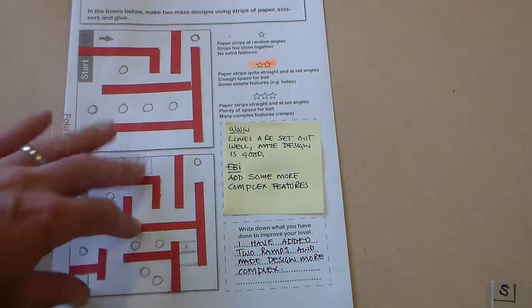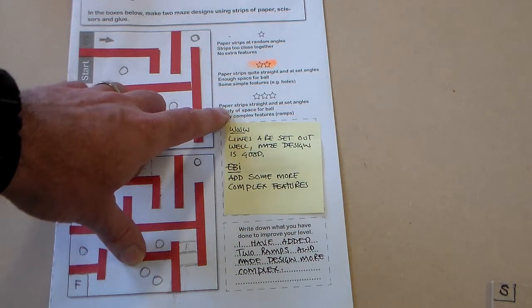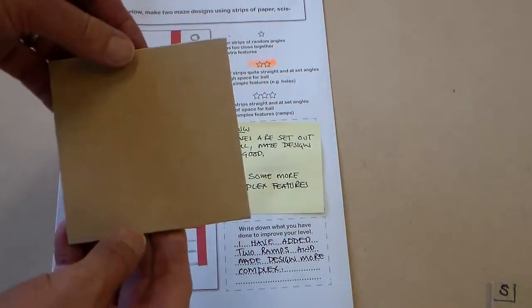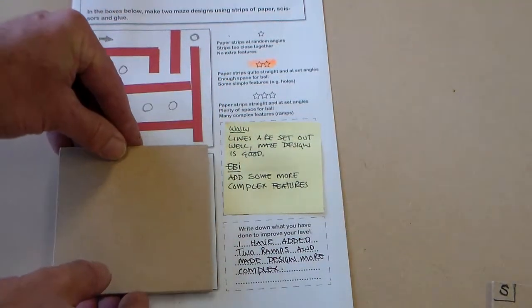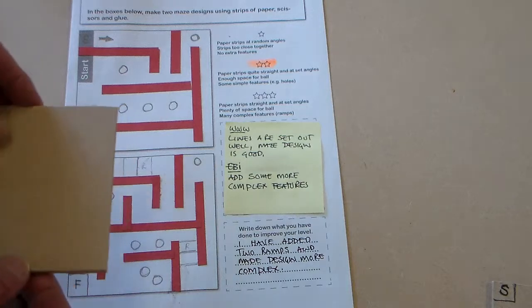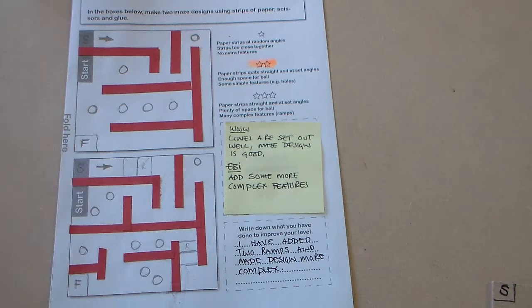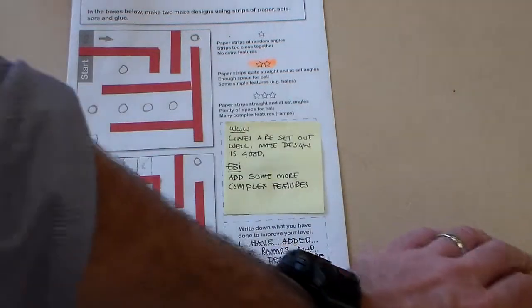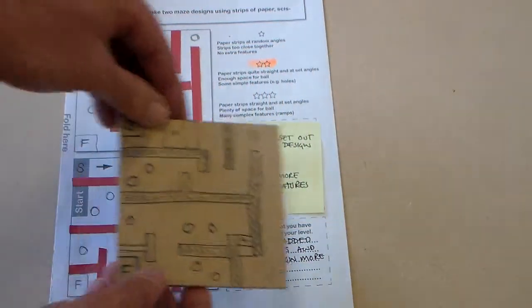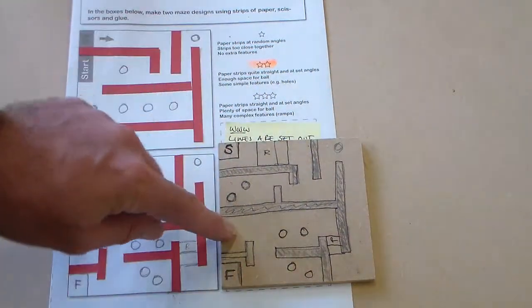Once we've got a design that we think is three stars, what we can do is take our square of MDF that we're going to put our maze on and we can carefully, using a pencil, transfer that design onto our square of MDF.